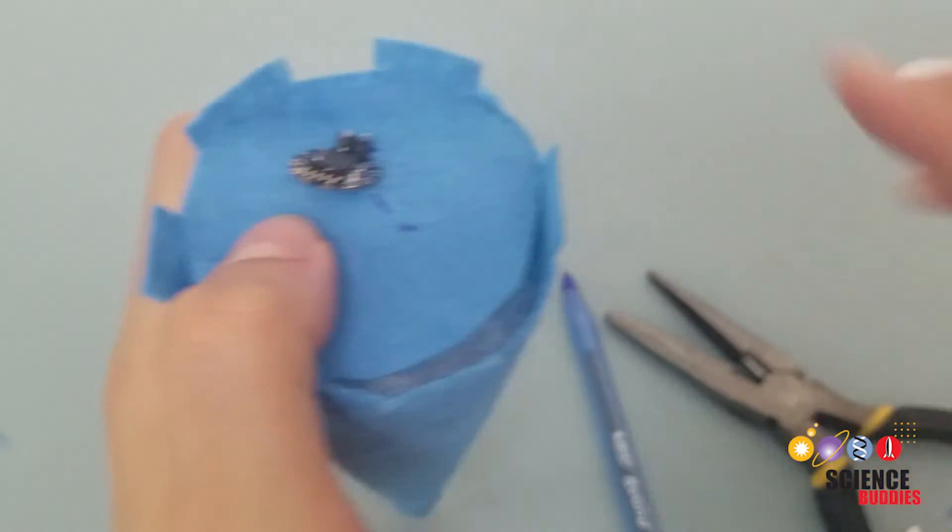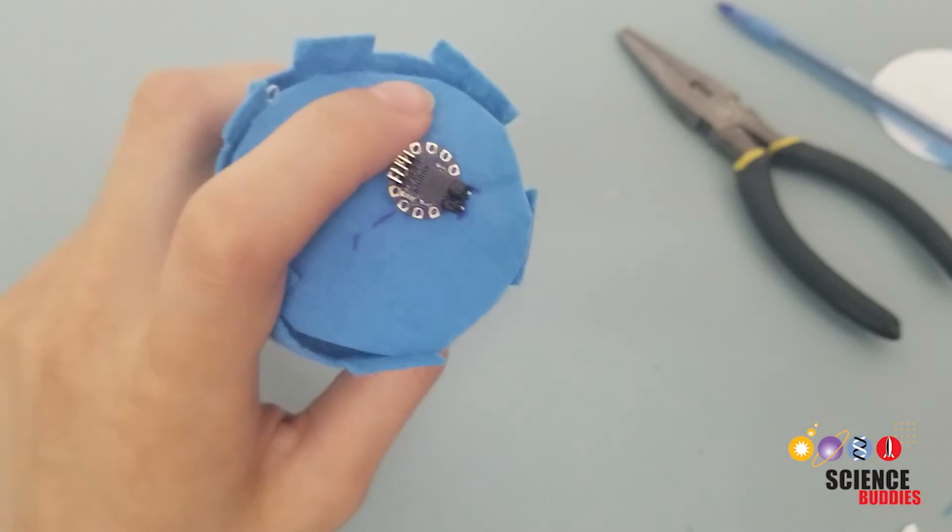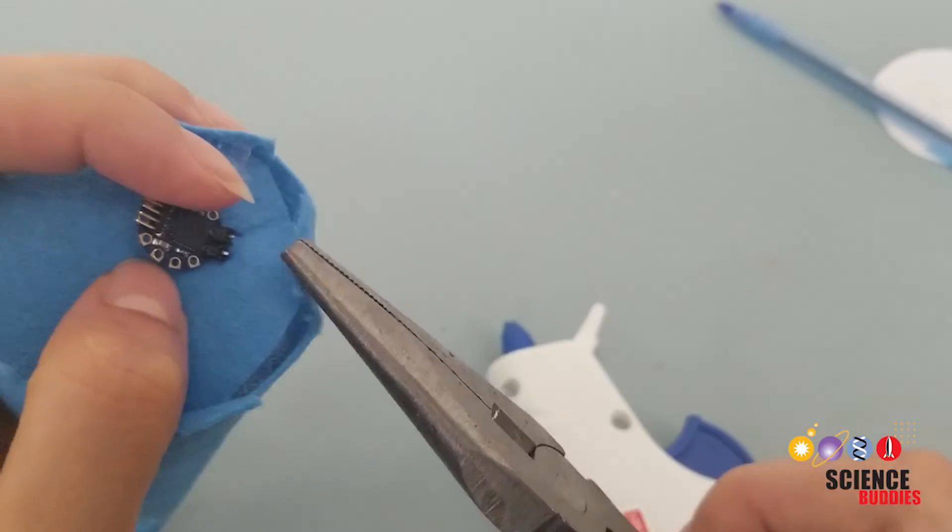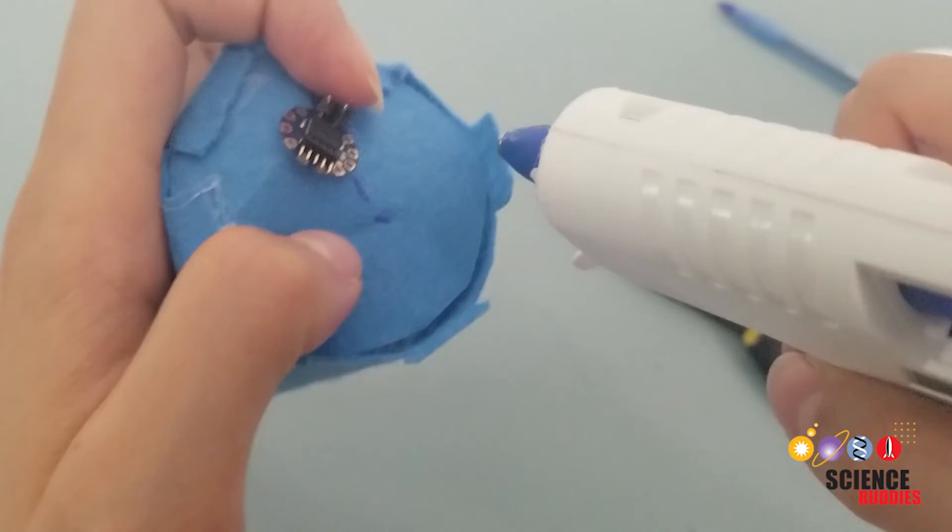Push the A piece into the unicorn horn base so that the TinyLily mini processor is facing outwards. Firmly fold the flaps around the base onto the A piece. Hot glue the flaps onto the felt piece.